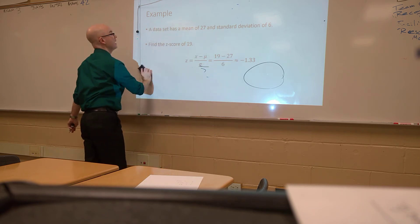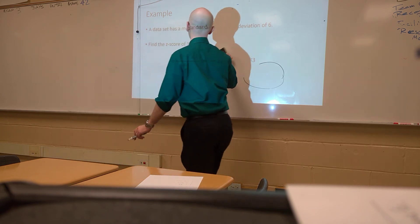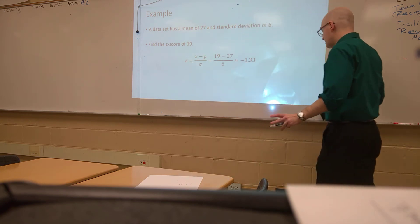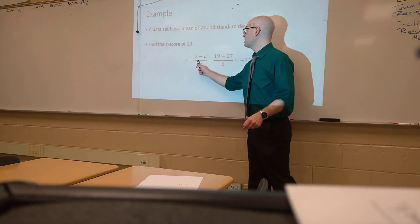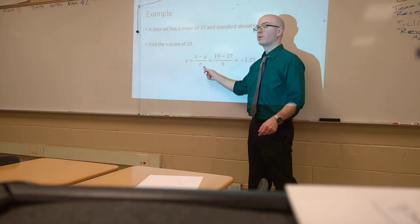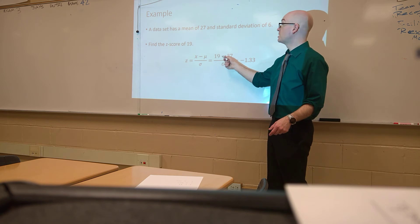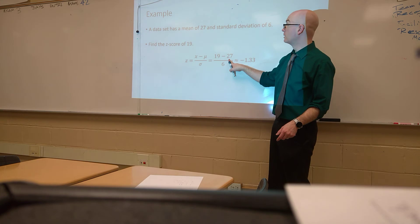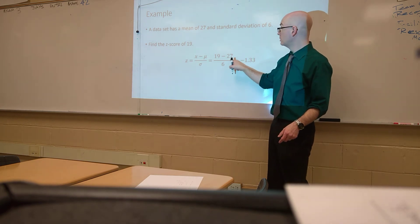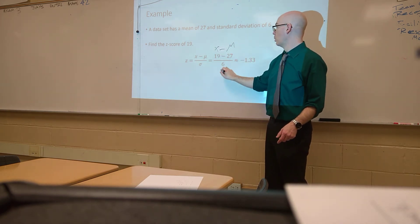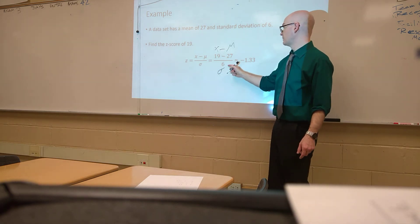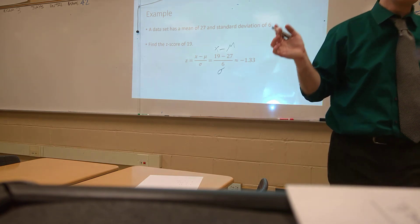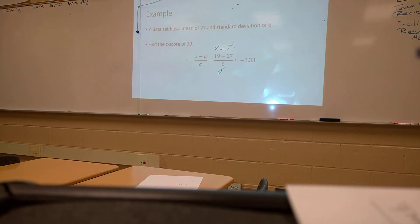So a data set has a mean of 27 and a standard deviation of 6. If we want to find the z-score of 19, simple. z is equal to x minus mu over your standard deviation, which is equal to substitute your value, 19, minus 27, which is your mu, over your standard deviation of 6. That is approximately negative 1.33. That's it. That is how you find the z-score. It is not terribly complicated.